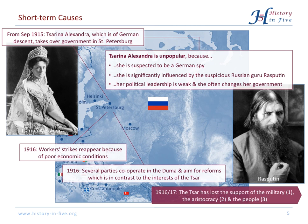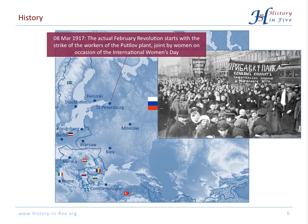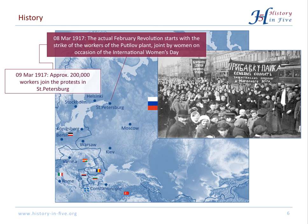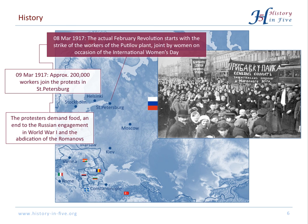The actual February Revolution started on the 8th of March 1917. The workers of the Putilov plant went to the streets and were joined by women celebrating International Socialist Women's Day. By the next day, there were already 200,000 workers and protesters in the streets of St. Petersburg.